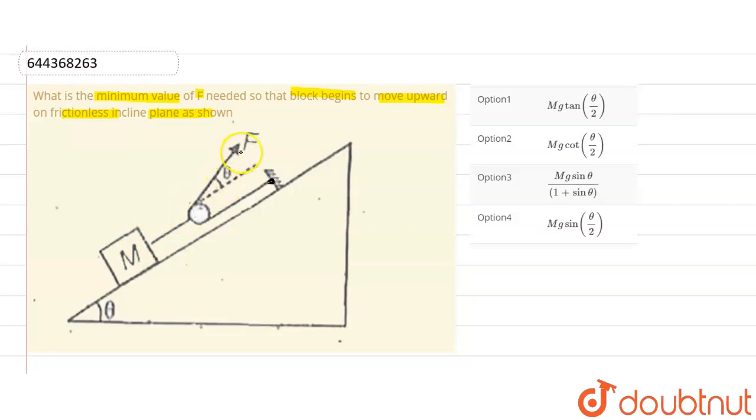We have to find what will be the minimum value, what will be F_min for which this block will start moving upward. So students, we can see that